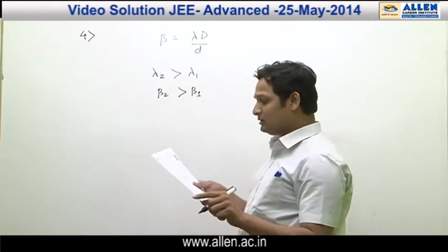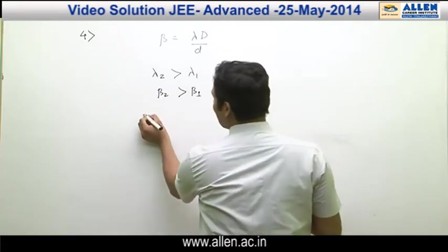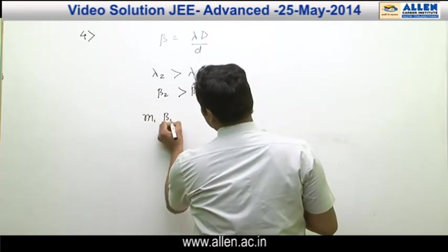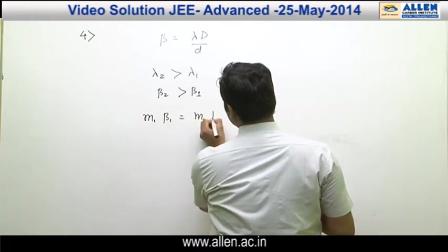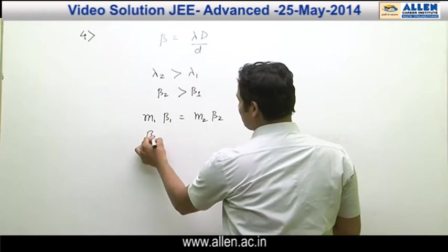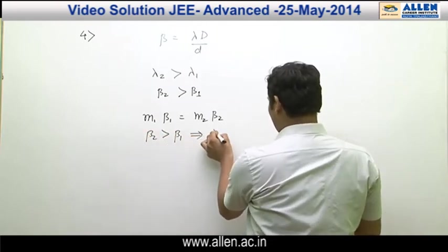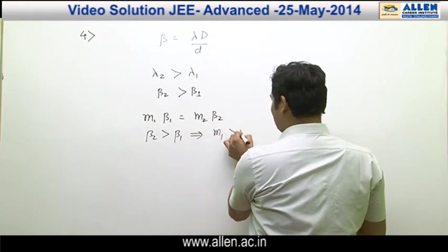Again, mth maximum and m2th maximum are coinciding, that means m1 beta 1 should be equal to m2 beta 2. Since beta 2 is greater than beta 1, this implies m1 should be greater than m2.